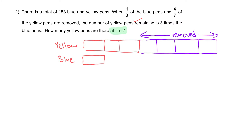For blue: when 1/3 of the blue pens were removed, what remains must be 2/3. So there is a missing one box. Before we draw it back, we cut this into two so everything is in equal units for comparison.